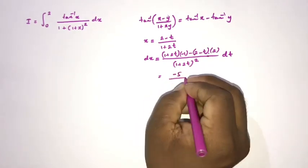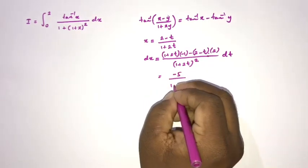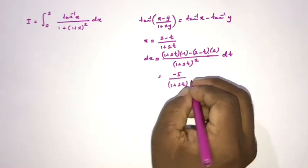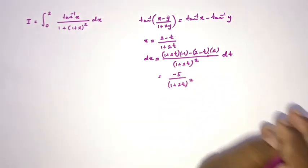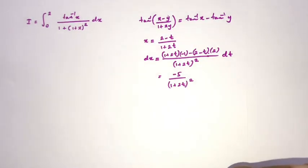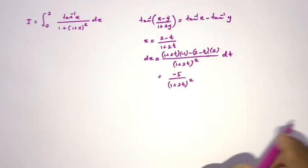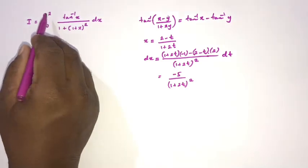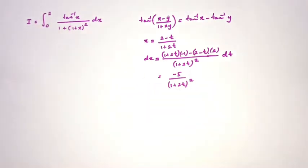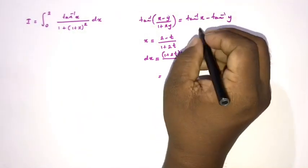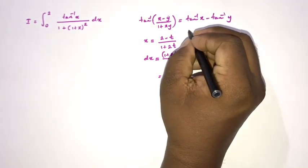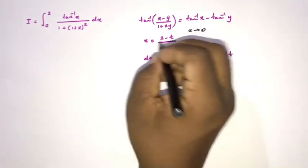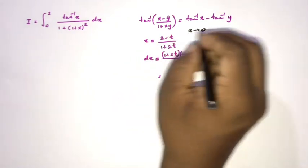Simplifying: minus 2t and plus 2t cancel, giving us minus 1 minus 4, so minus 5, over (1 plus 2t) squared. So dx equals minus 5 over (1 plus 2t) squared dt. We also need to change the boundaries of integration.